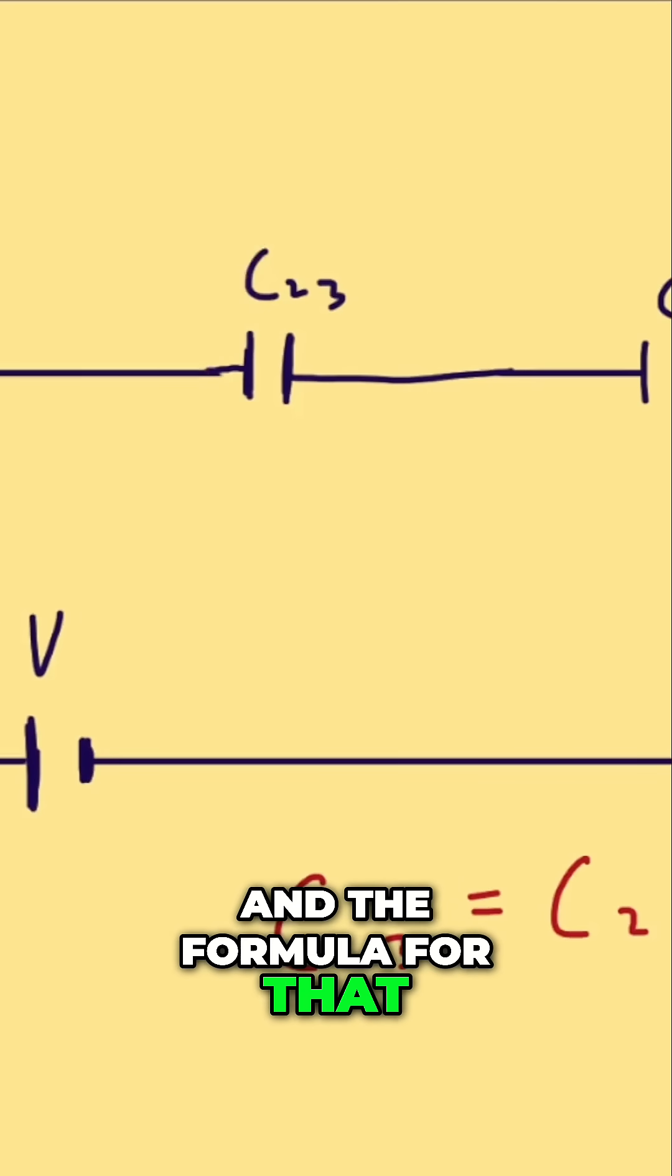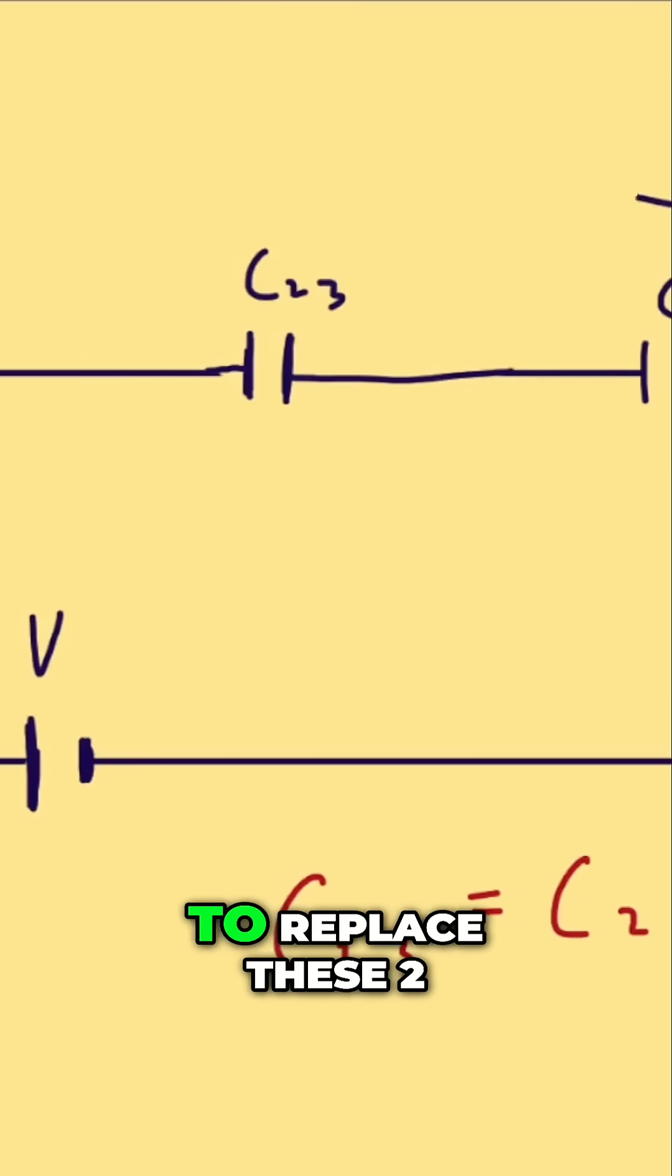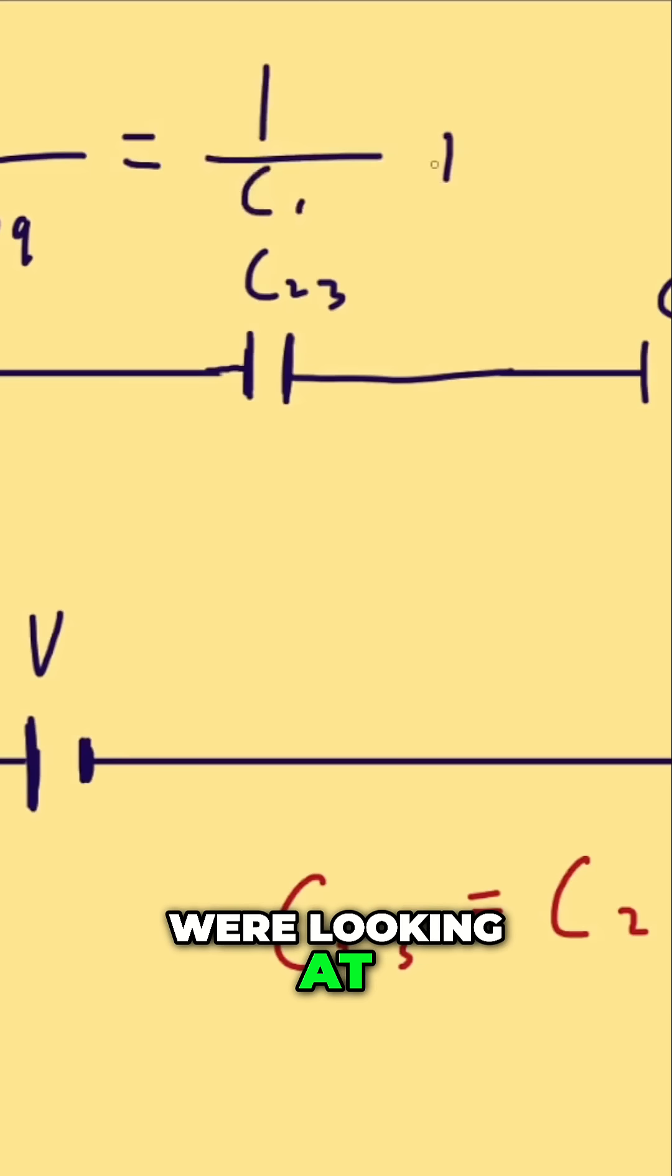And the formula for that, to find an equivalent capacitor to replace these two, is like this, which is what we were looking at earlier.